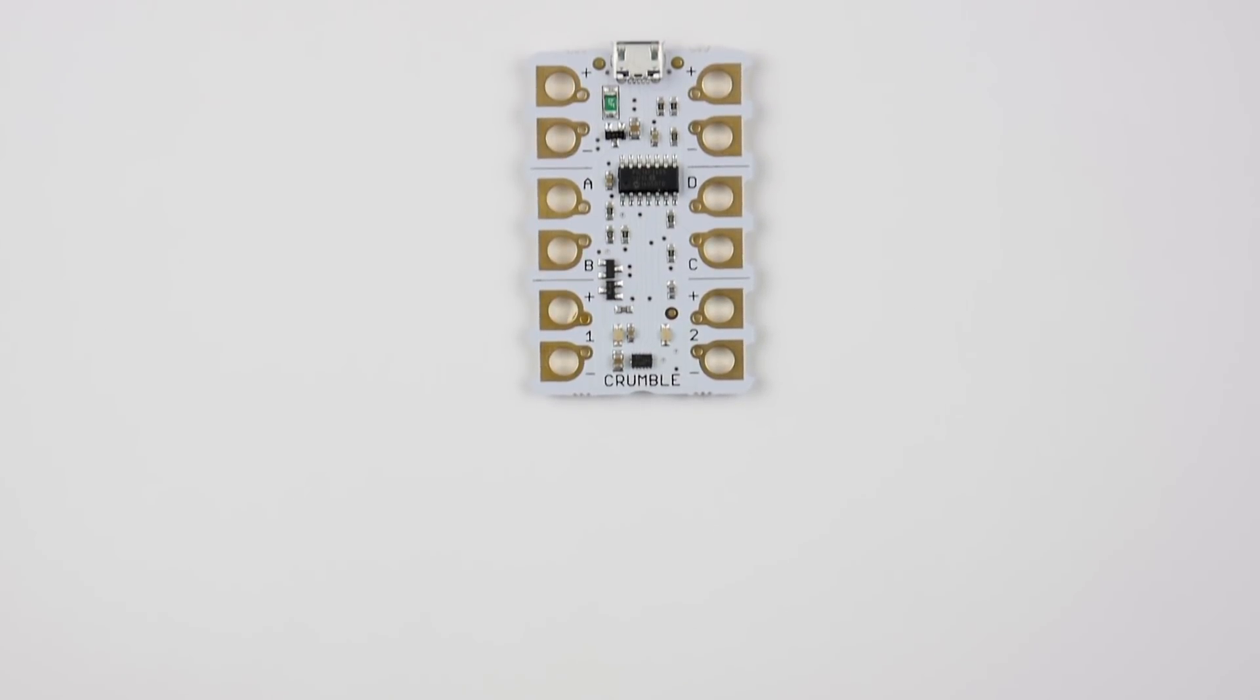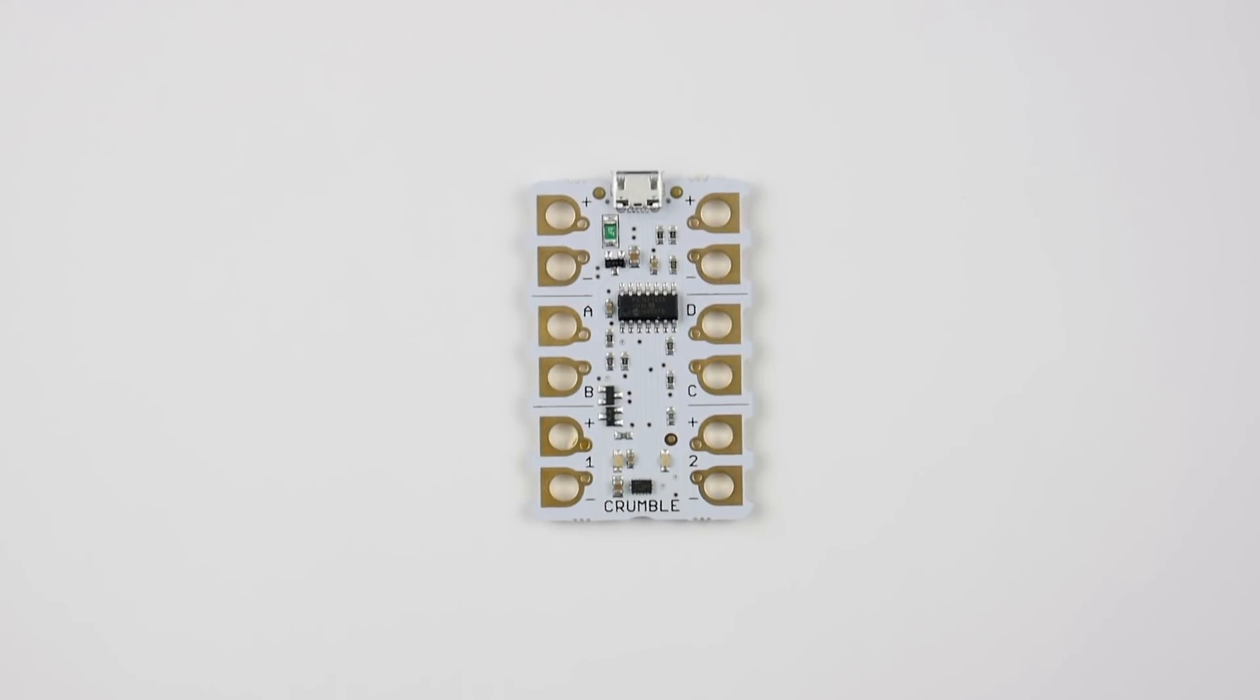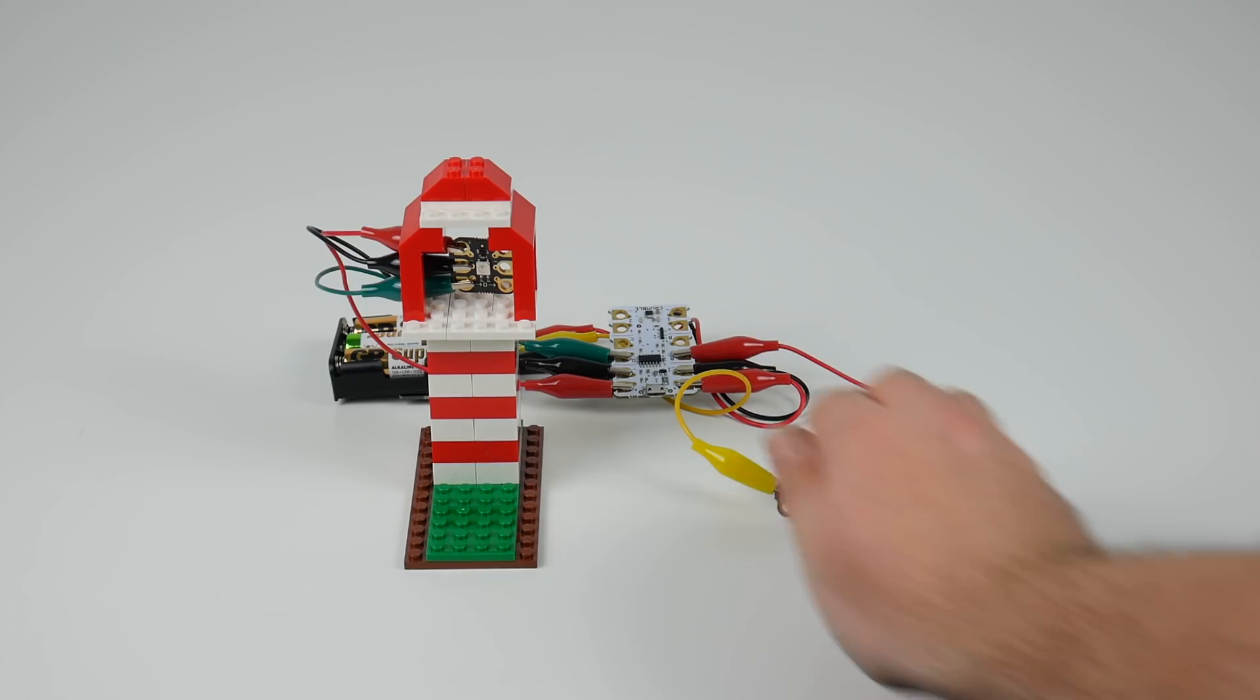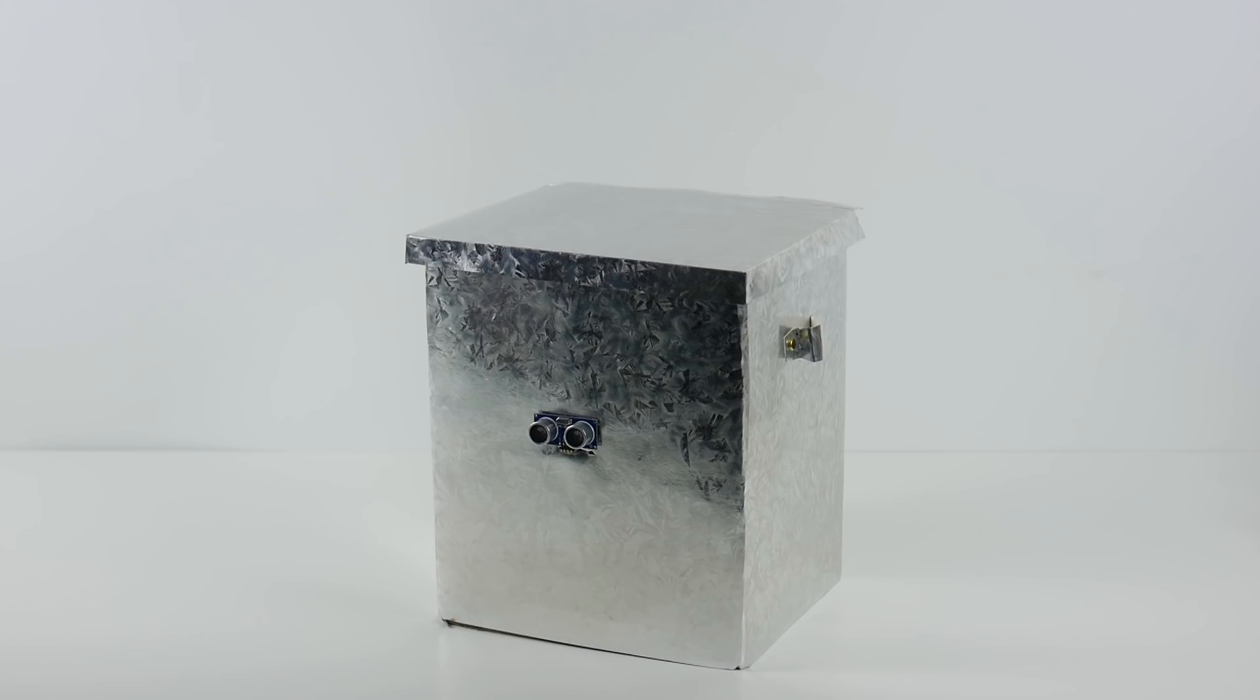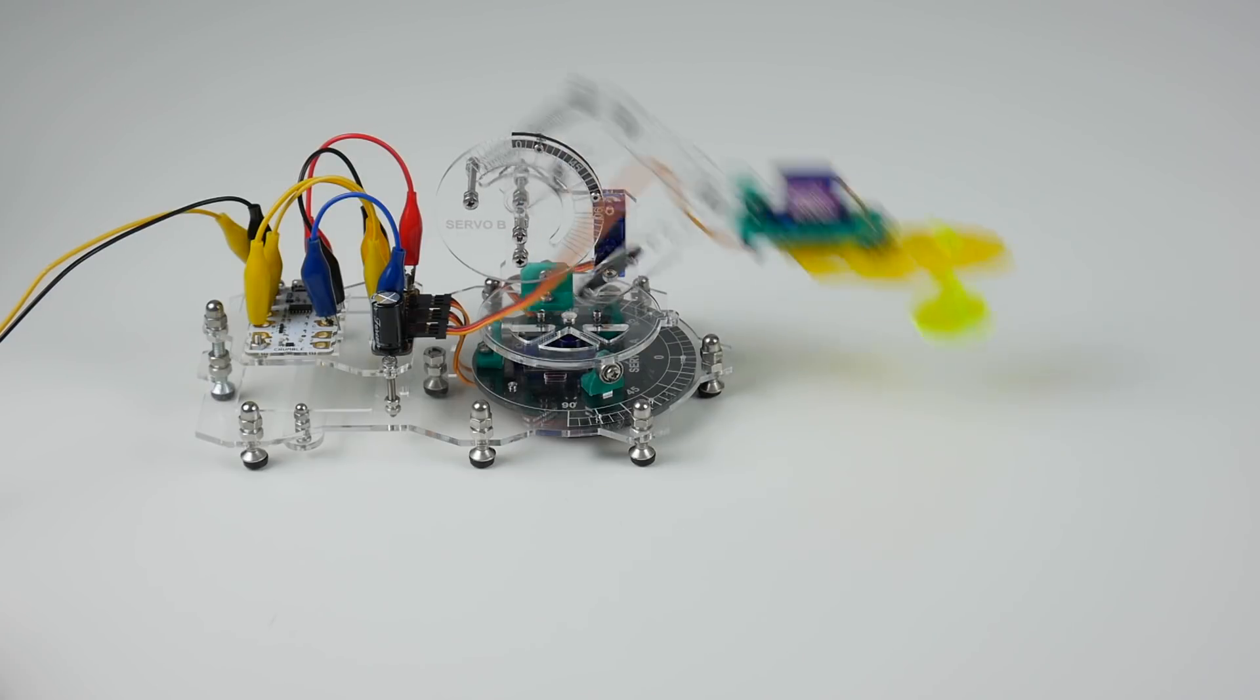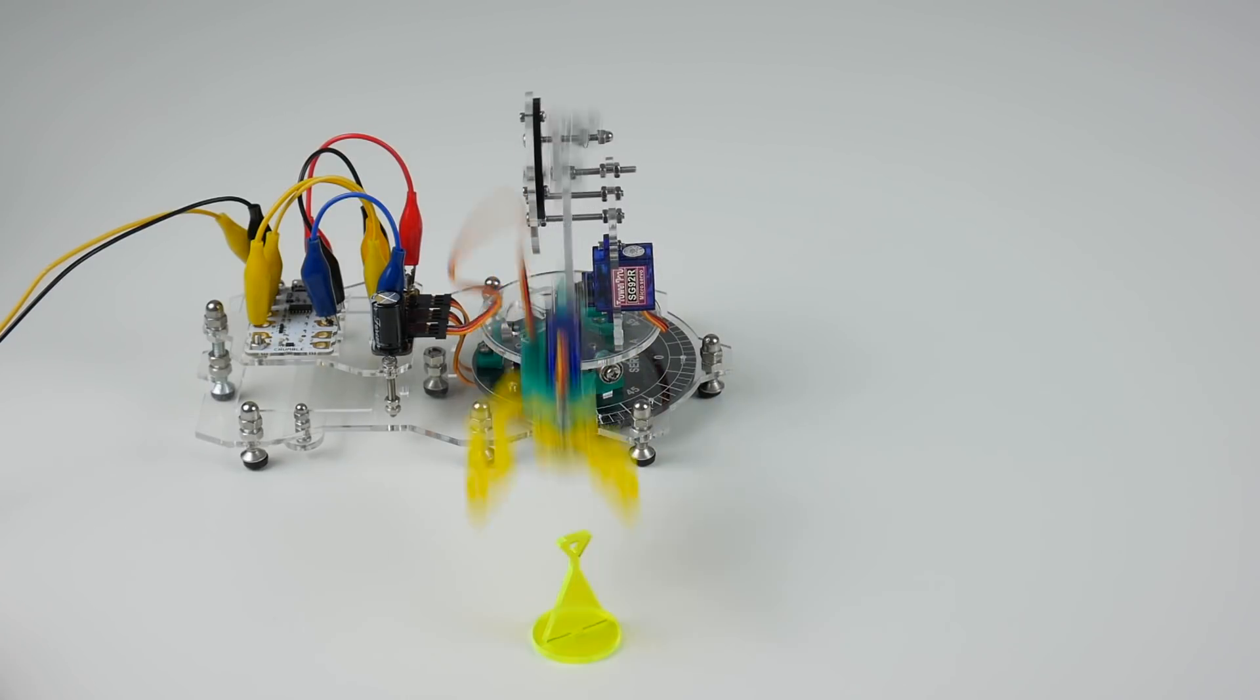So the Crumble is this little programmable board here. We've got four inputs and outputs where you can connect switches, lights, LEDs. You can connect different types of sensors to these inputs and you can actuate servos, which are a special kind of motor where you can change position to a particular angle.